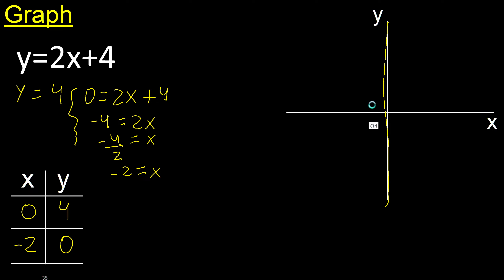y is 4. Positive y, negative, positive. 4 is here. x is 0, x is 0, here 0, 4. Therefore the point is here.